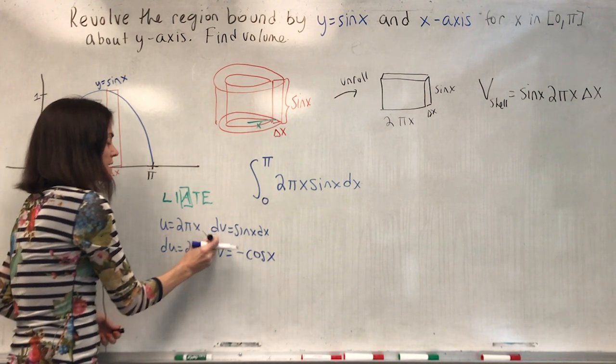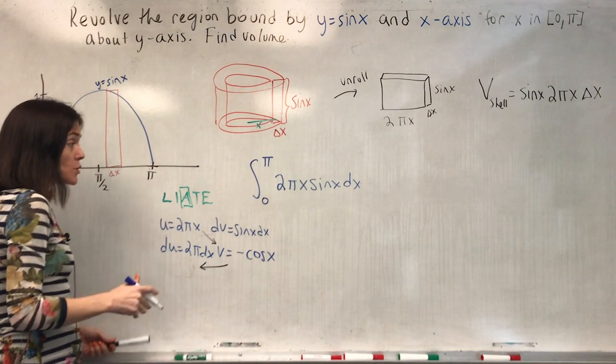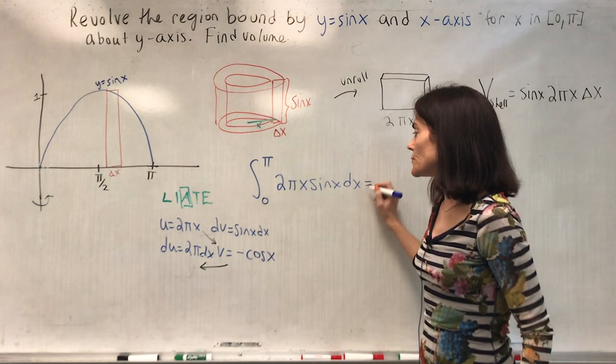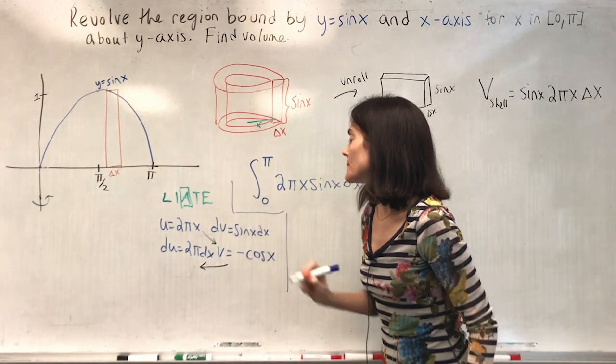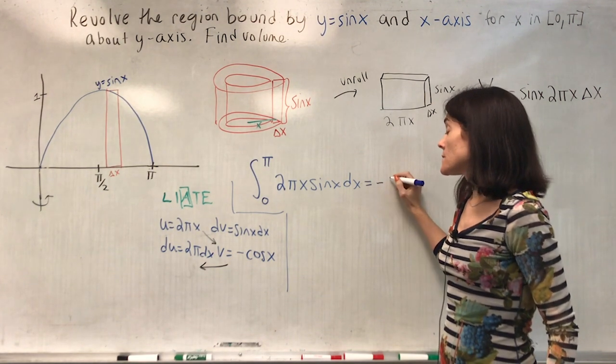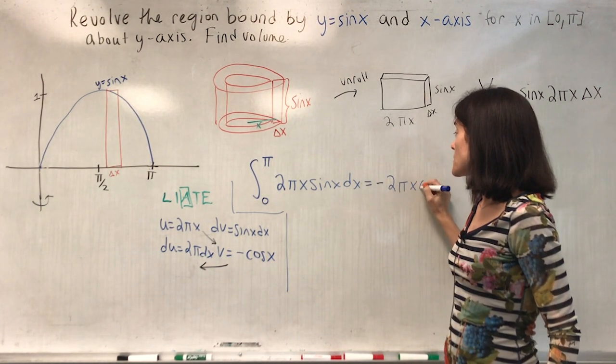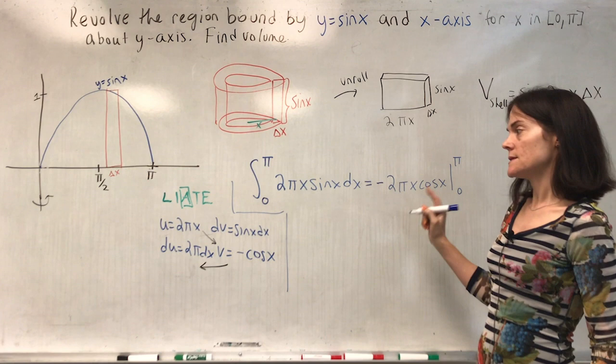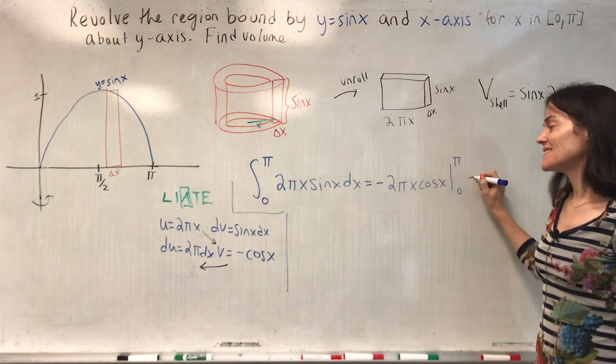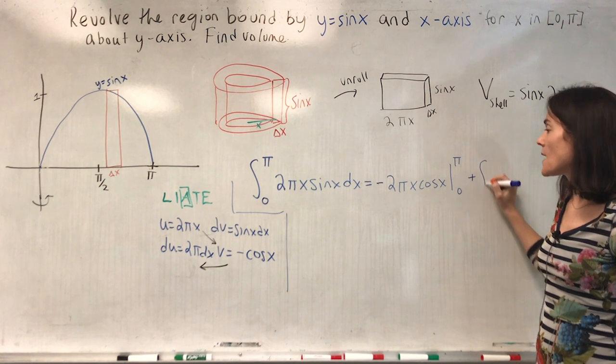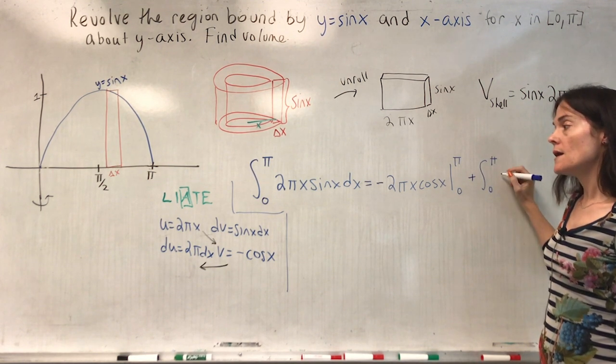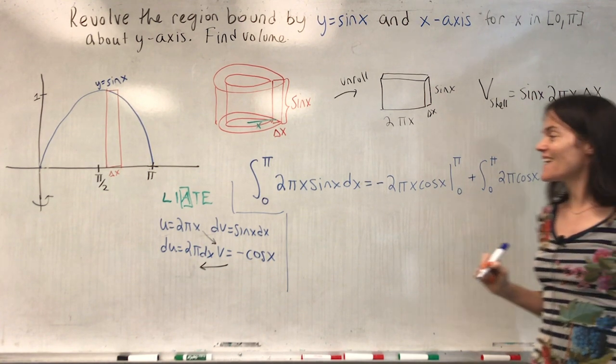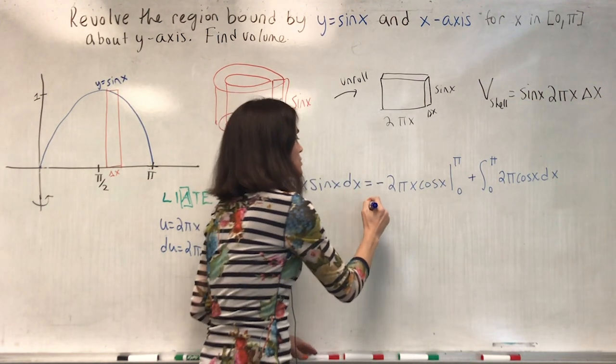And then we have uv minus the integral of v du, but it's definite. So this will be equal to, here's my little side work over here, minus 2 pi x cosine x evaluated between 0 and pi. That's the uv. And then minus, well, we have minus a minus. Maybe I will just make it a plus the integral of 0 to pi of 2 pi cosine x dx. This is our volume and we are getting closer to being there.